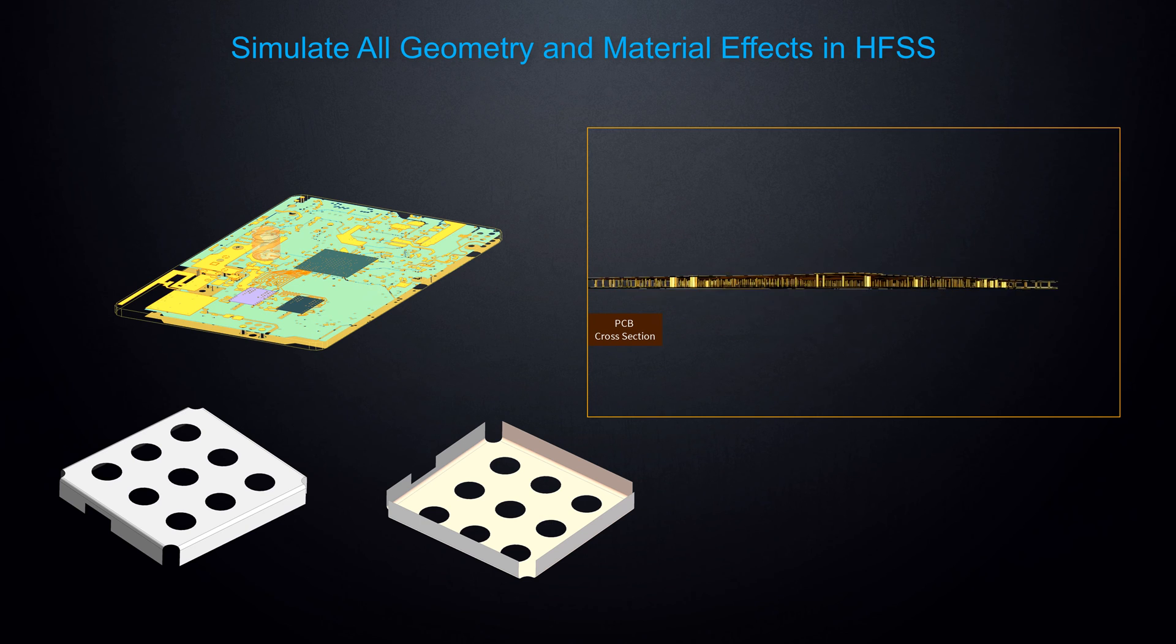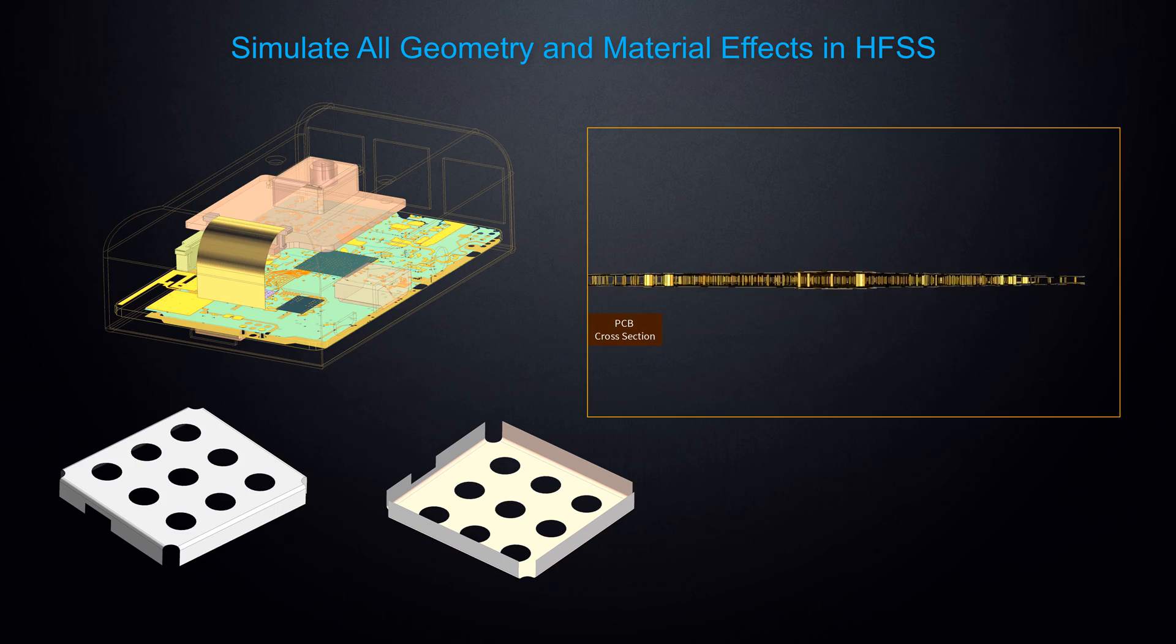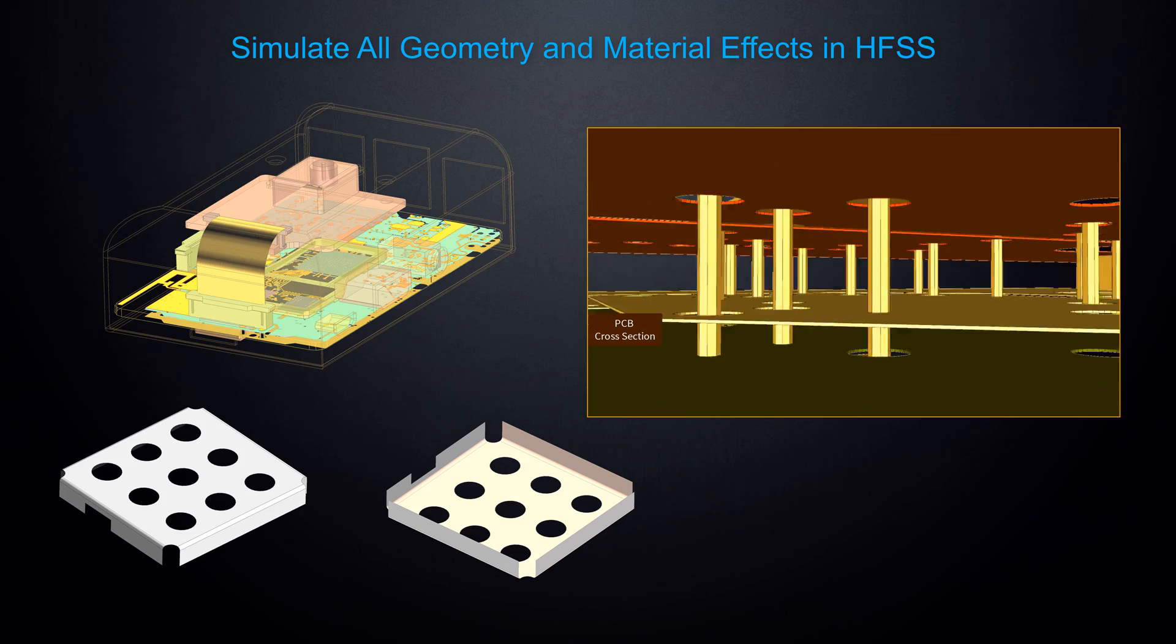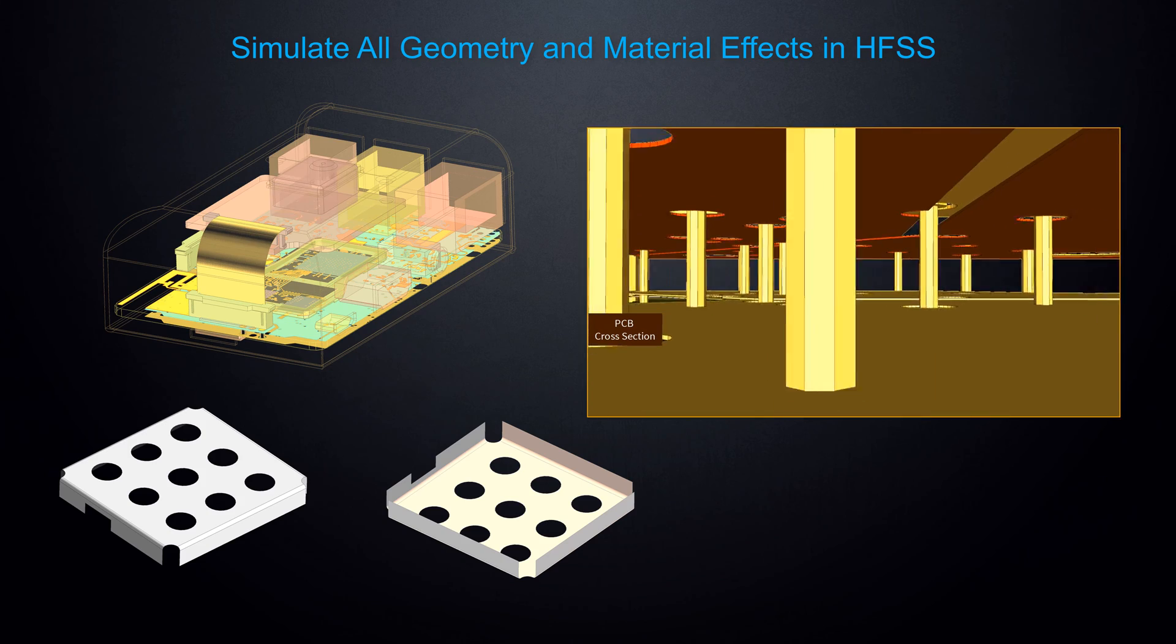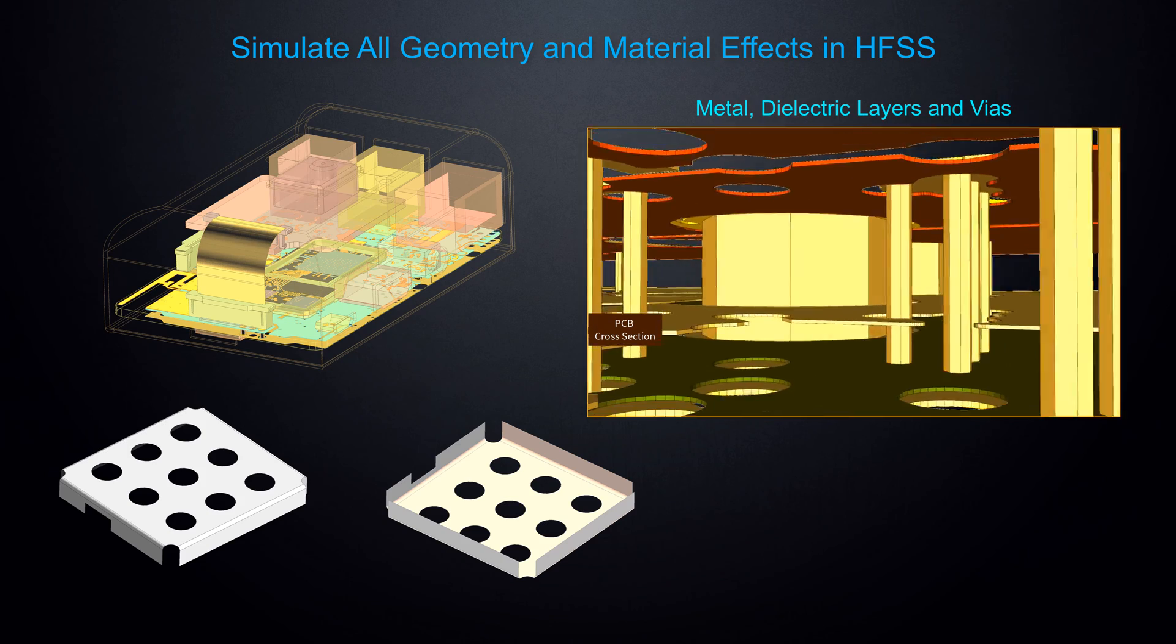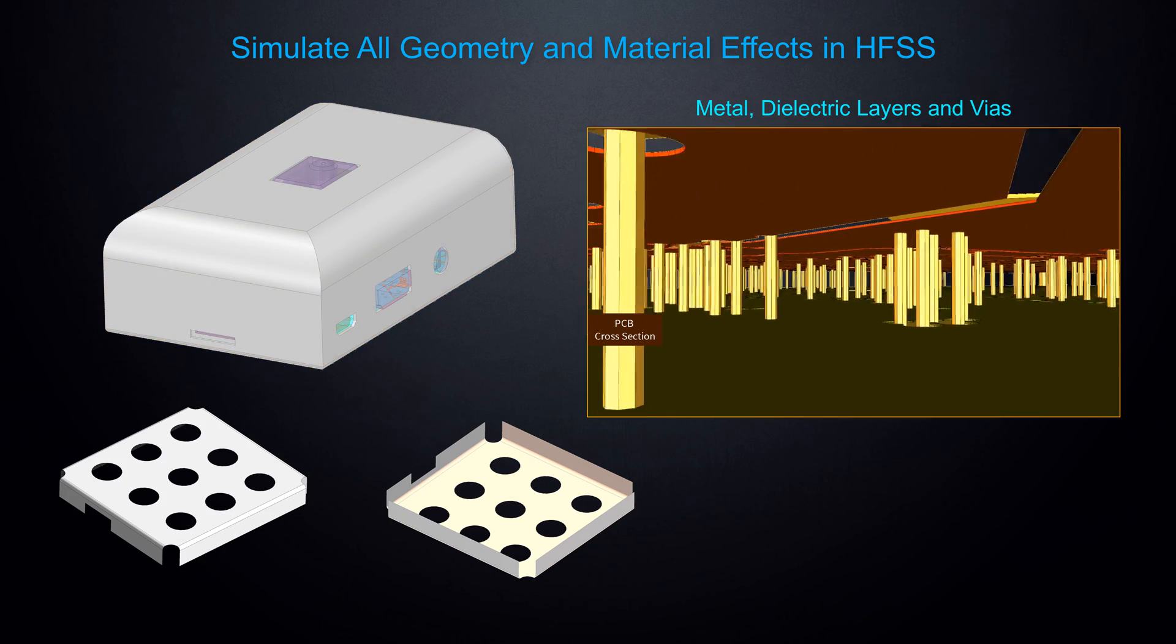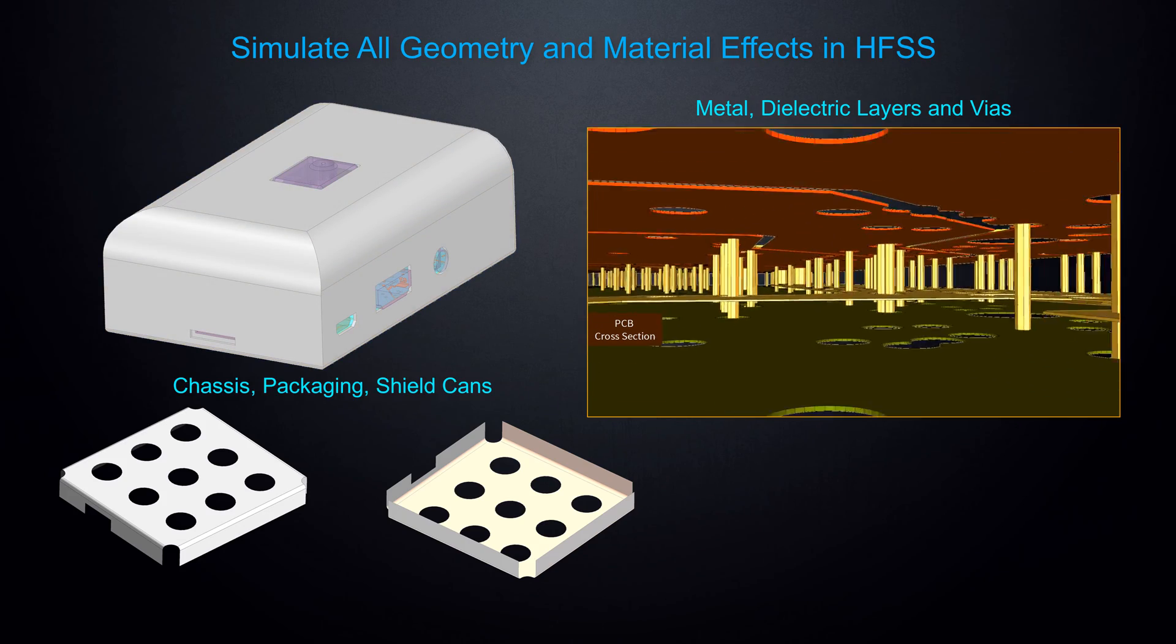Using HFSS, an accurate S-parameter matrix is obtained and considers all geometry and material effects throughout the volume. This may include characteristics of the PCB itself, such as dielectric layers and vias, as well as features associated with the integration like chassis, packaging, or shield cans.